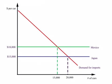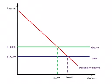So if we have free trade, U.S. citizens will buy cars from Japan. Because these two countries produce the same or similar car, and Japanese cars are $3,000 cheaper than Mexican cars. So at a price of $15,000, the U.S. will import 20,000 cars, and all of them will come from Japan.